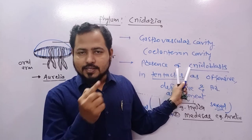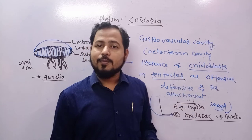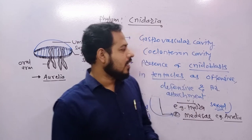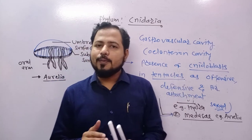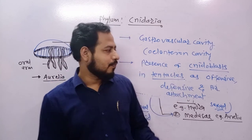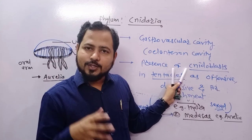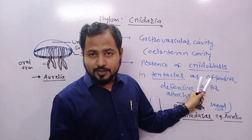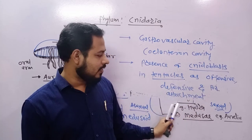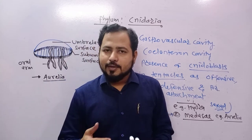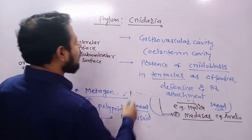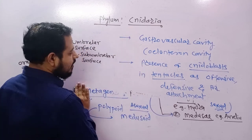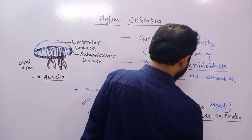Inside the nidoblast cells there is a needle-like structure called nematocyst, which contains toxic substances. This stinging apparatus allows the animal to attack prey or predators. It serves as an offensive structure, a defensive structure, and also functions for attachment.